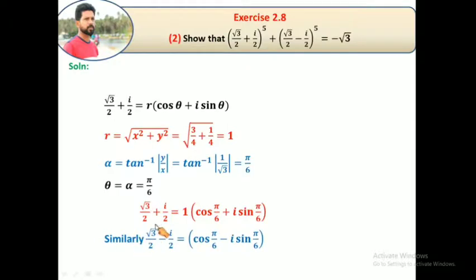Similarly, √3/2 - i/2 equals cos(π/6) - i sin(π/6). So (√3/2 + i/2)^5 plus (√3/2 - i/2)^5.